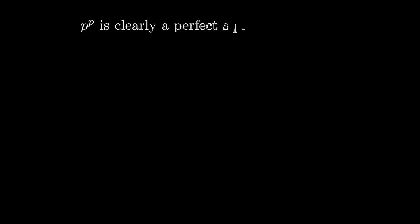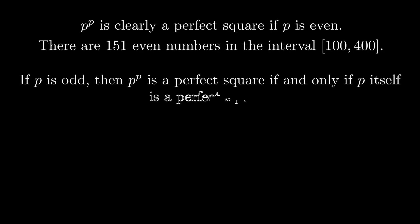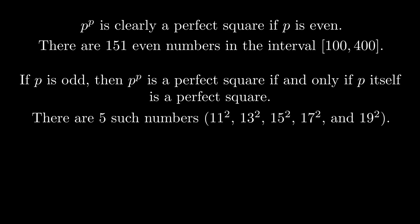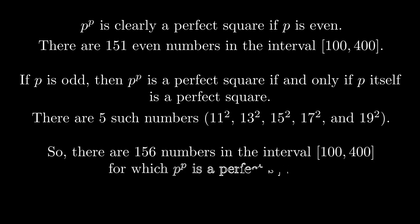P raised to the power P is clearly a perfect square if P is even, since the exponent is even in that case. There are 151 even numbers in the sample space. On the other hand, if P is odd, then P raised to the power P is a perfect square if and only if P itself is a perfect square. There are five such numbers, so there are 156 numbers for which P raised to the power P is a perfect square. Since there are 301 numbers in our sample space, the required probability is 156 over 301.